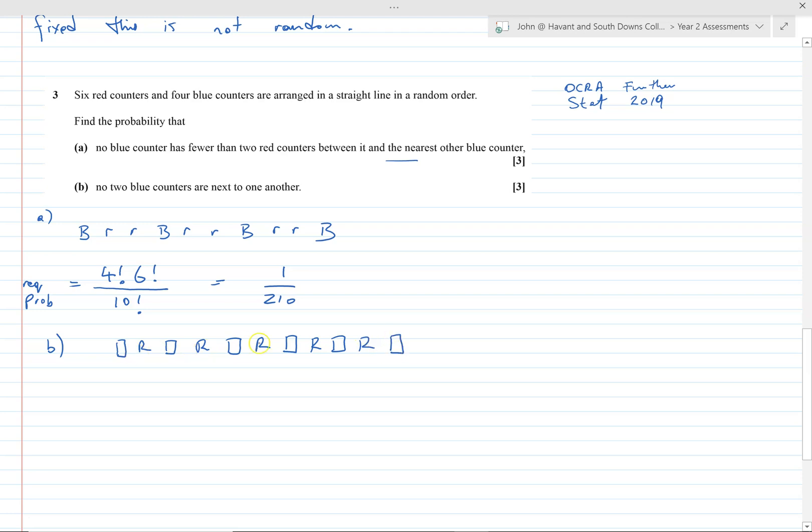So here we go, one two three four five six red ones, and there's the number of possible gaps. And look at the number of places you can place the blue ones: seven possible ways. Seven gaps in which the four blue counters can be placed.